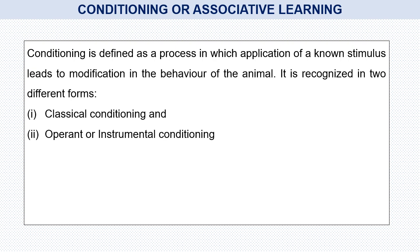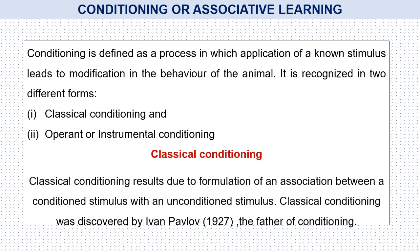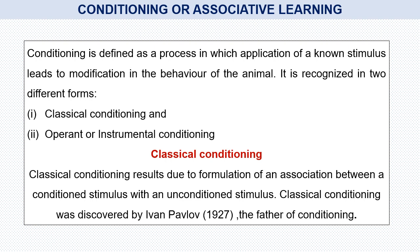Conditioning is also called associative learning. It is defined as a process in which the application of a known stimulus leads to modification in the behavior of the animal. It is recognized in two different forms: number one, classical conditioning; and number two, operant or instrumental conditioning. Classical conditioning results from the formation of an association between a conditioned stimulus and an unconditioned stimulus. Classical conditioning was discovered by Ivan Pavlov, the father of conditioning.